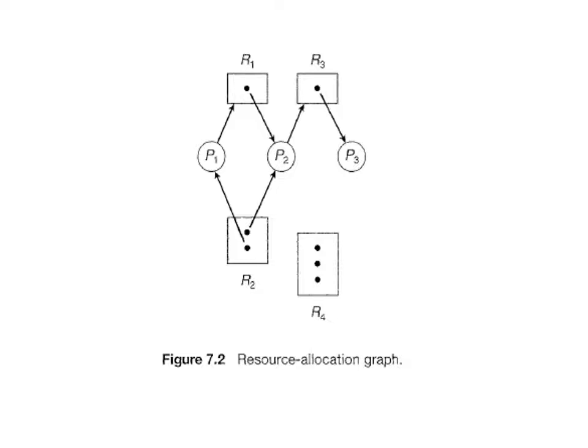Now see the figure of the resource allocation graph. Process P1 is holding an instance of resource type R2 and is waiting for an instance of resource type R1. Process P2 is holding an instance of R1 and an instance of R2, and is waiting for an instance of R3. Process P3 is holding an instance of R3.